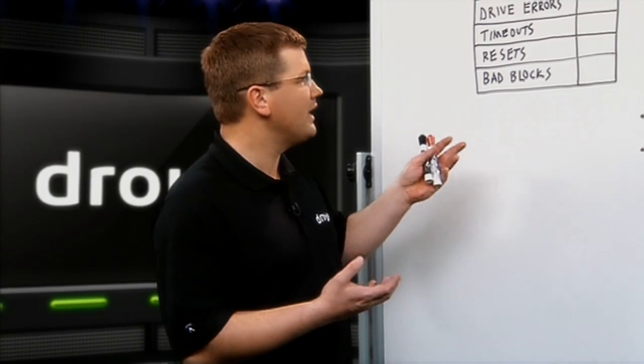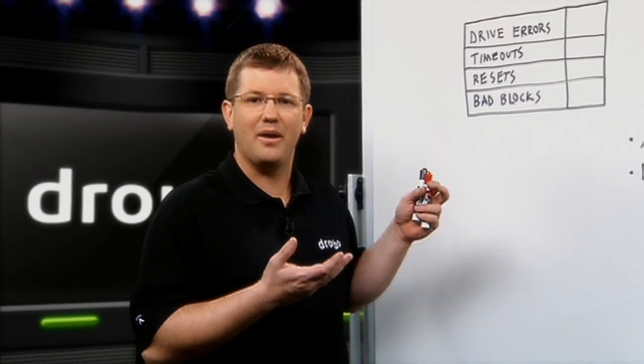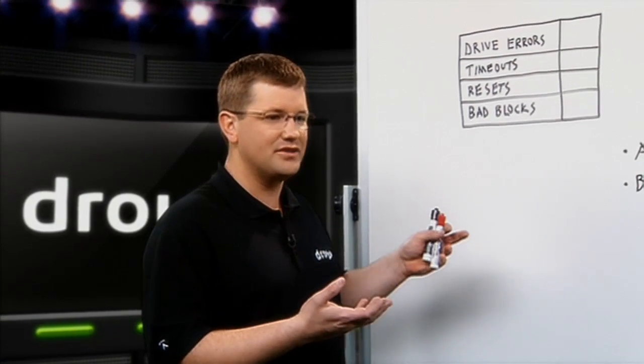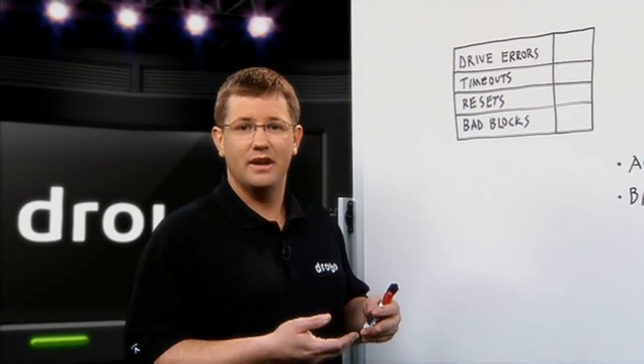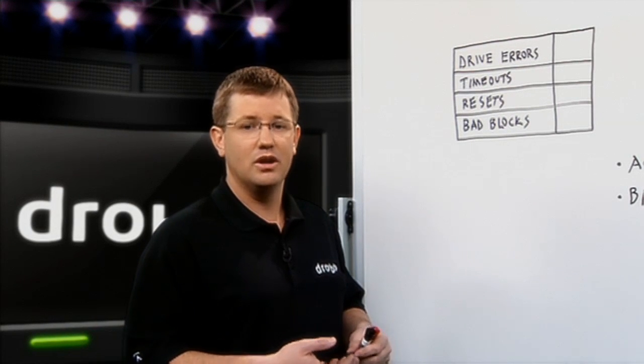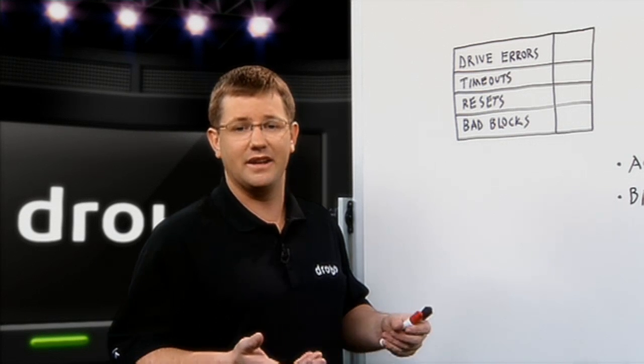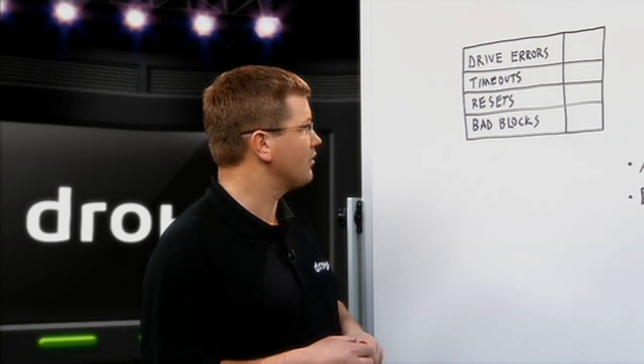I'm going to walk you through how we handle errors in a Drobo storage array, and one of the big things about error handling with regards to drives is it's a redundant storage array. One of the values of that is if you have a single drive failure, or even two simultaneous drive failures, the array can protect you from losing any data or even having downtime. So I wanted to give you an up-close look at how we do that in our arrays.